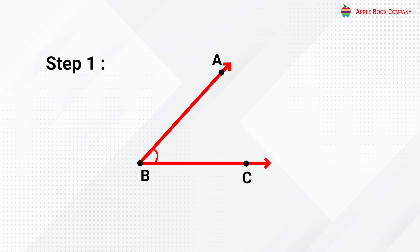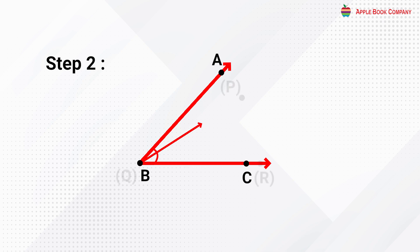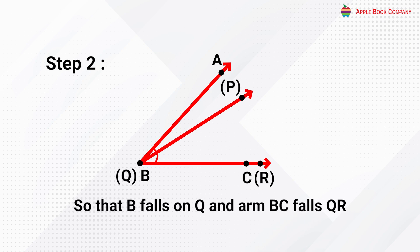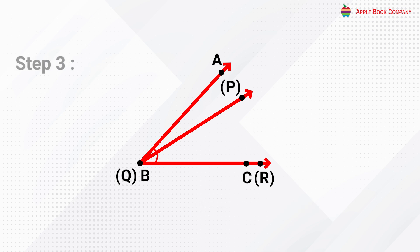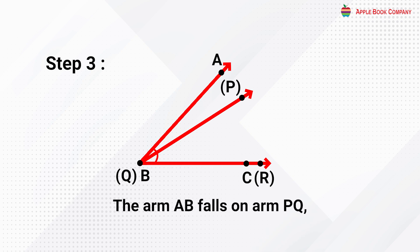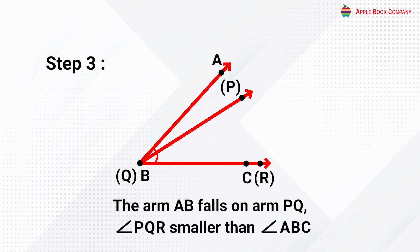Step 1: draw angle ABC on a sheet of paper. Step 2: place angle ABC over angle PQR so that B falls on Q and arm BC falls on QR. Step 3: the arm AB falls on arm PQ. We can say that angle PQR is smaller than angle ABC.